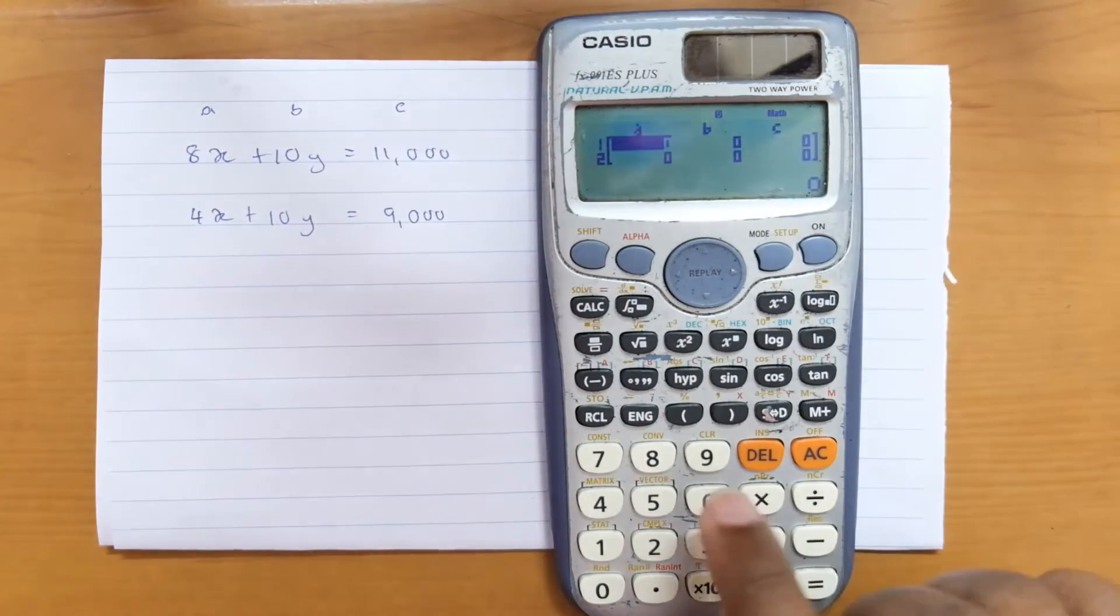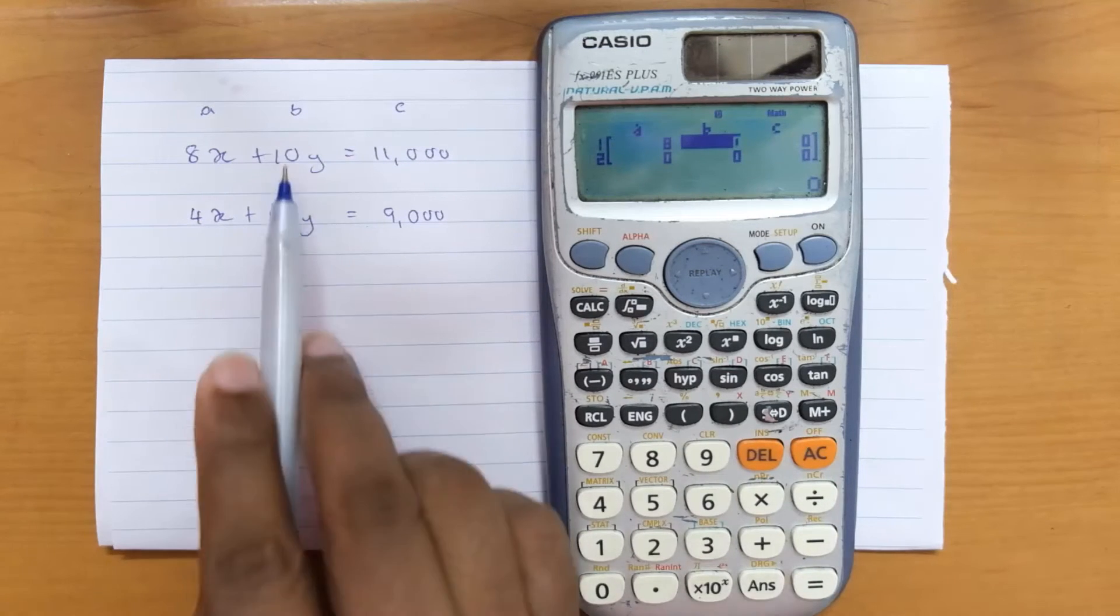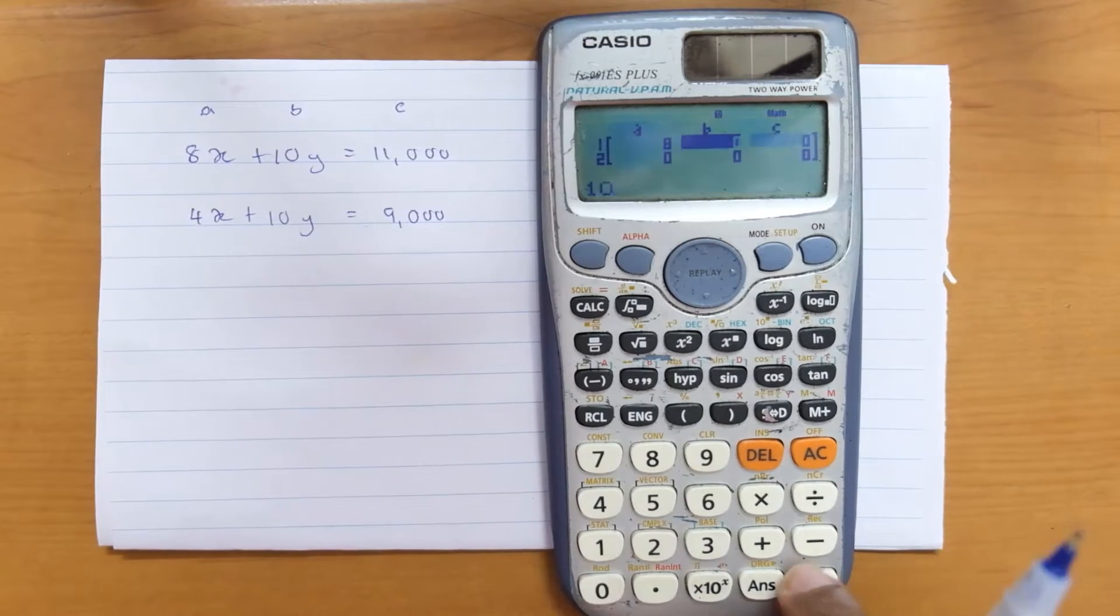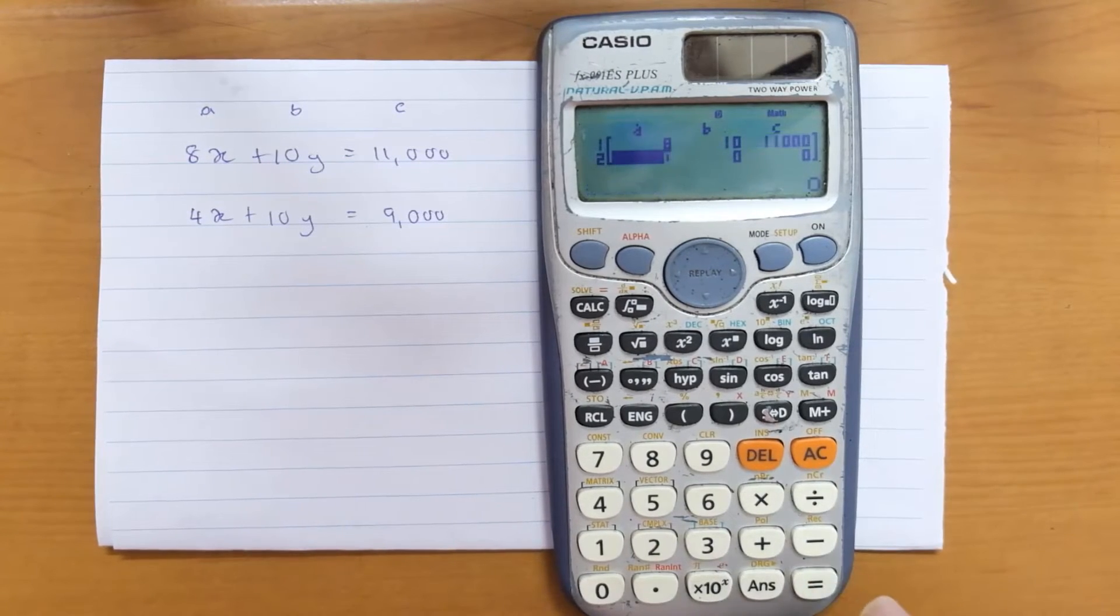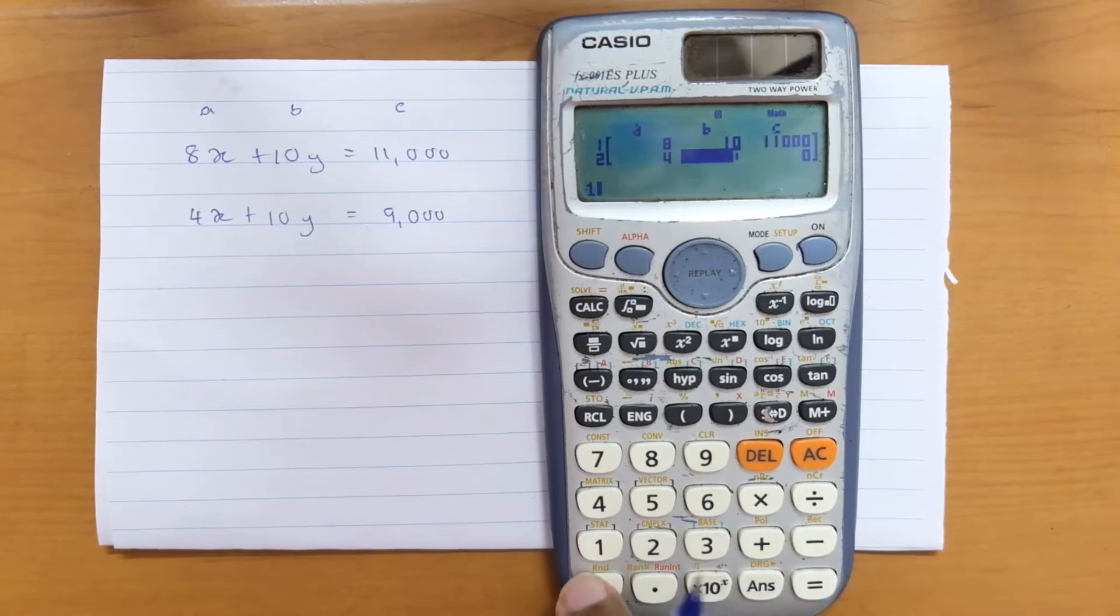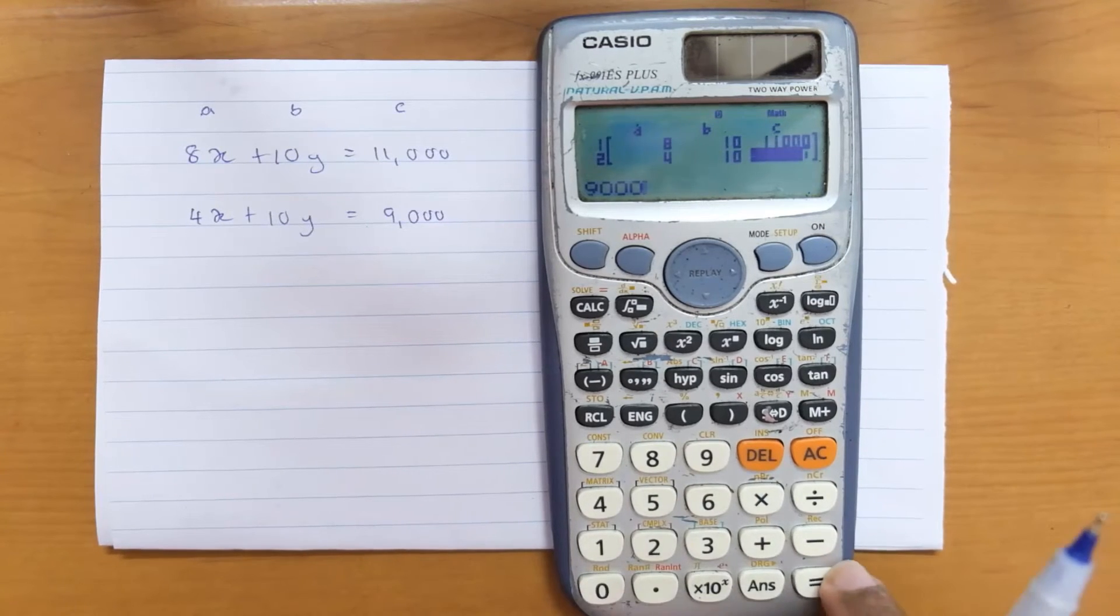So let's enter the values. Here it is 8, press equals, then 10, press equals, then 11000, press equals. Then 4, press equals, then 10, press equals, then 9000, press equals.